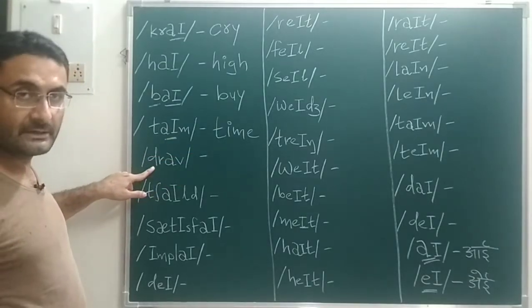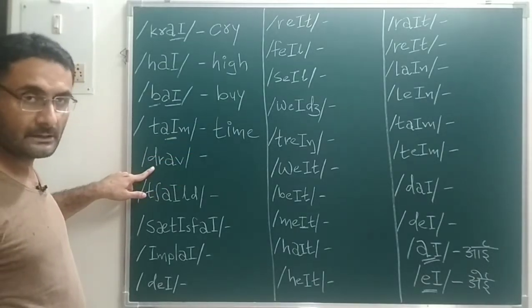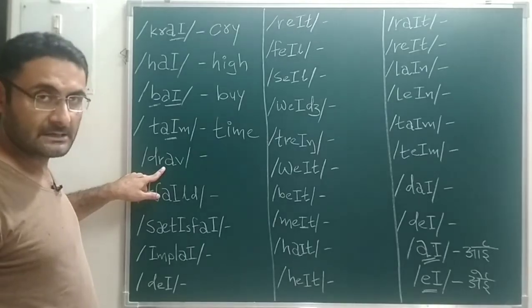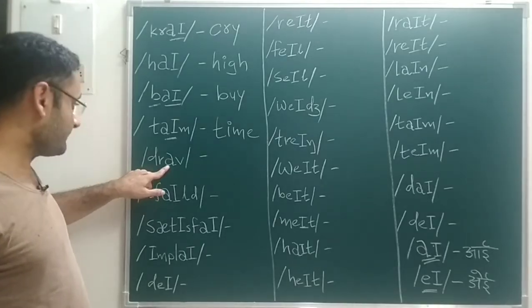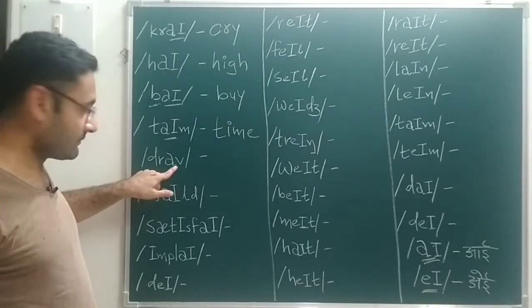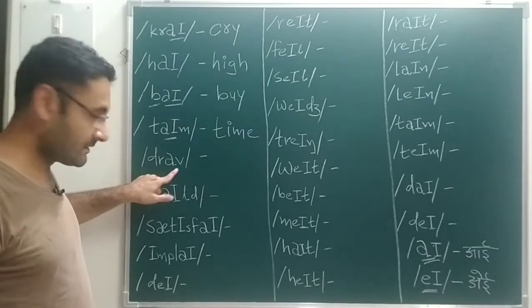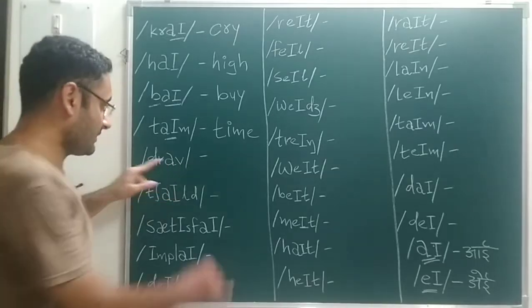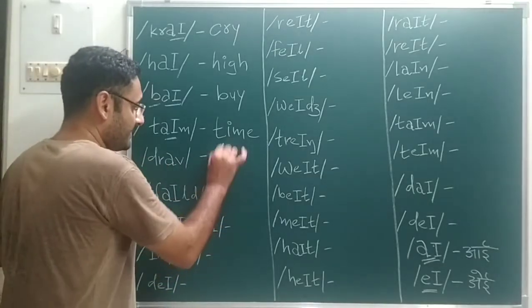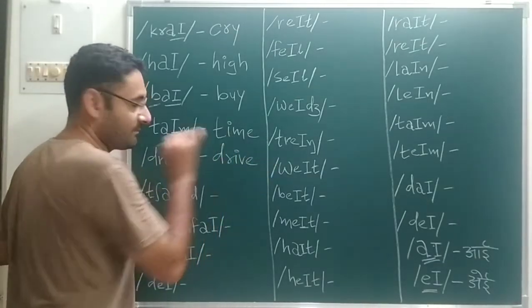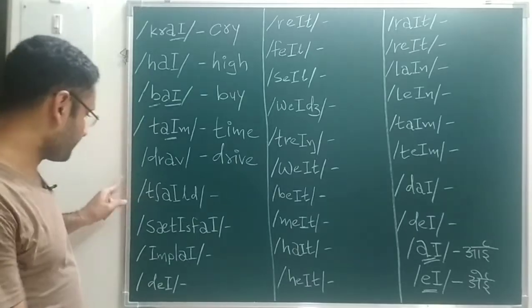Next: D sound, R sound, then I sound, V — D, R, I, V — that gives us 'drive'. So I will write: drive.